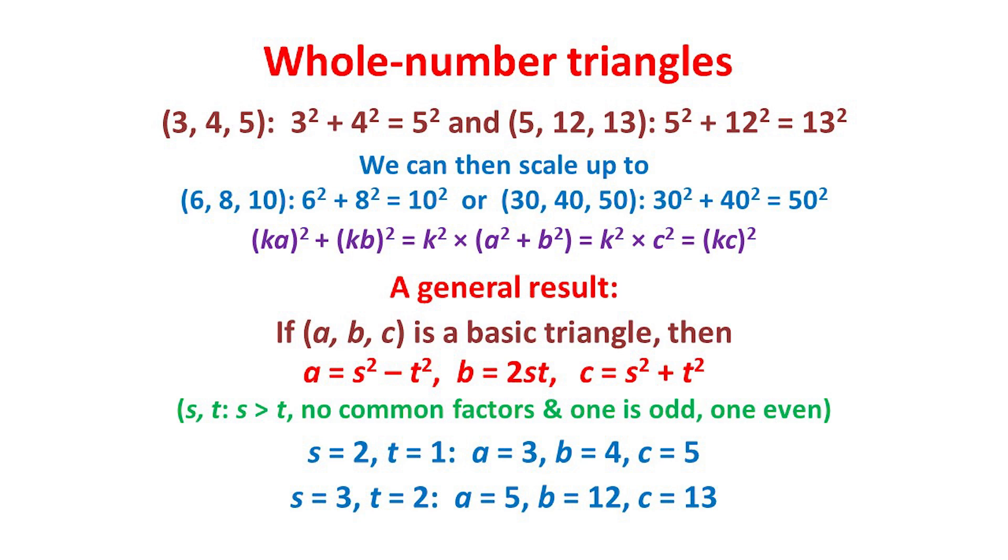Is there a formula which always gives right-angled triangles with whole number sides? The ancient Greeks had a way of doing so. If a, b, c is a basic right-angled triangle, where a, b, and c are whole numbers with no common factors other than 1, then they showed that we can write a = s² - t², b = 2st, and c = s² + t², where the number s is greater than the number t, where s and t have no common factors, and where one of the numbers s and t is odd and the other is even.